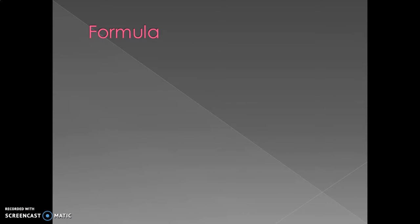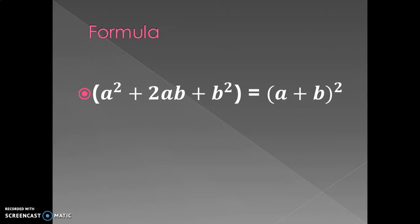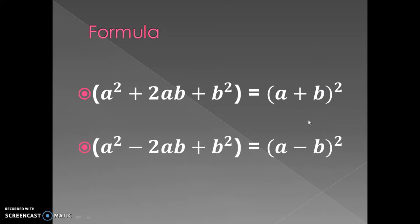Last time we also saw some questions of exercise 10.8 in which we are using two particular formulas. The first is a² + 2ab + b², which is equal to (a + b)², and the second is a² - 2ab + b², which is equal to (a - b)². The basic information this formula gives us is that if you have an expression with the square of the first term, the square of the second term, and 2 times the first and second term in the middle, you can simplify and write them in the form of a sum squared.